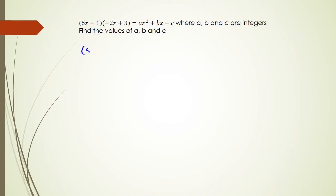So nothing changes, we just got a quadratic and we're going to expand it out and work out what a, b, and c are. So first off, we've got 5 times negative 2, which is negative 10, and of course, x times x is x squared. 5x times 3 is going to be 15x. Negative 1 times negative 2x is going to be plus 2x. And negative 1 times 3 is going to be negative 3.